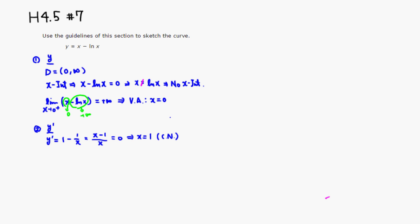Let's find the second derivative. y double prime: the derivative of 1 is 0, and the derivative of negative 1 over x is positive 1 over x squared. This is always positive, which tells us that y is always concave upward.